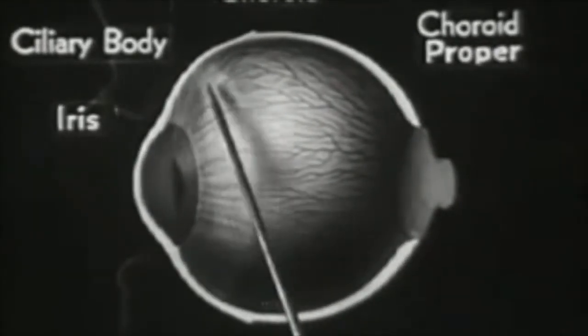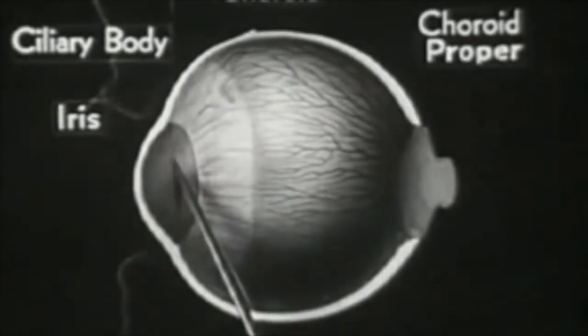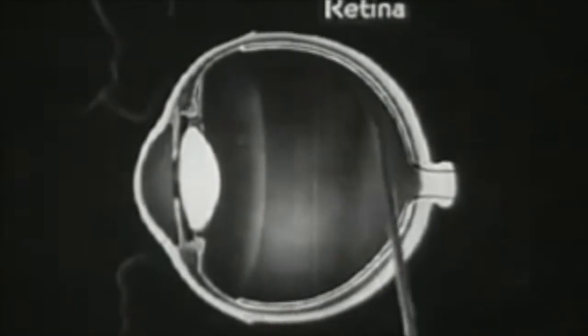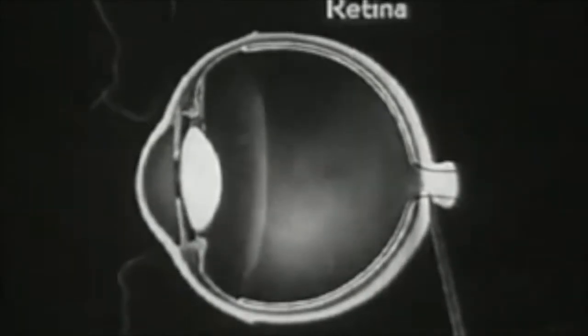The innermost layer of the eyeball is the retina, a very delicate membrane. The retina is actually a part of the optic nerve which transmits the light impulses to our brain. The retina is the most important and complex structure in the eyeball.